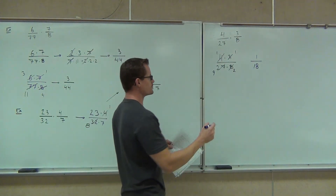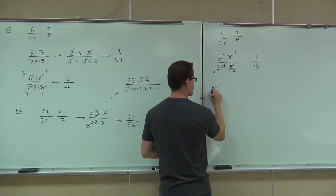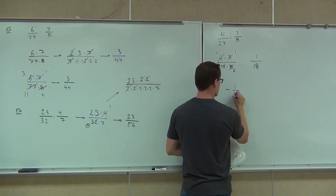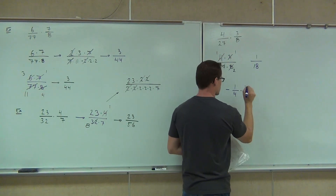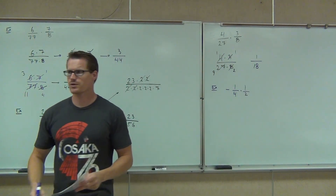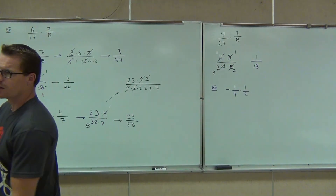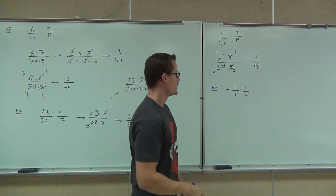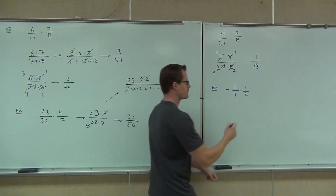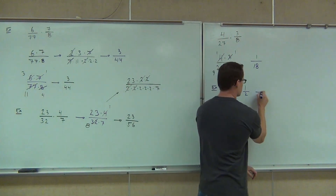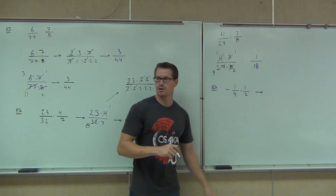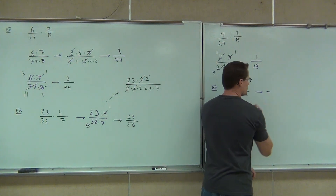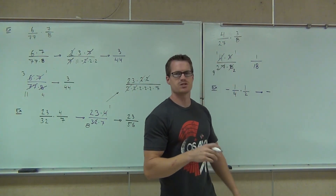What about negatives? Negative one-fourth times one-half. Nothing about the multiplication rules changed — a negative times a positive is still a negative. So the answer is negative one-eighth. We know our answer is negative, and oftentimes it's best to determine the sign first.